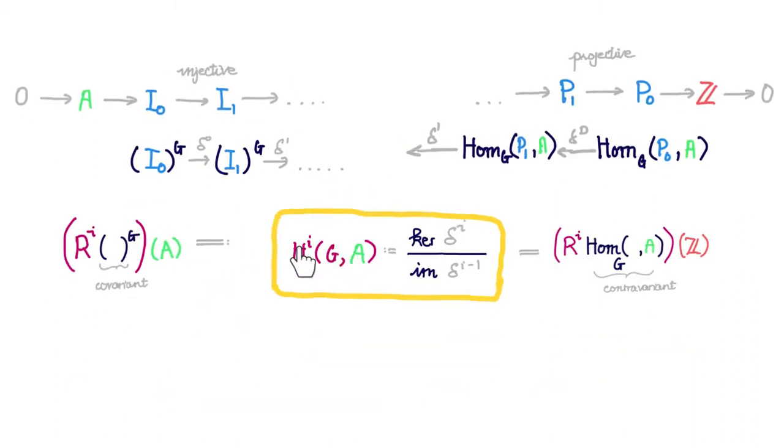Now, this definition of this i-th cohomology group as the value of the i-th right-derived functor of this G-invariant functor at the module A. That definition, while concise and simple, it's not always so convenient in practice.